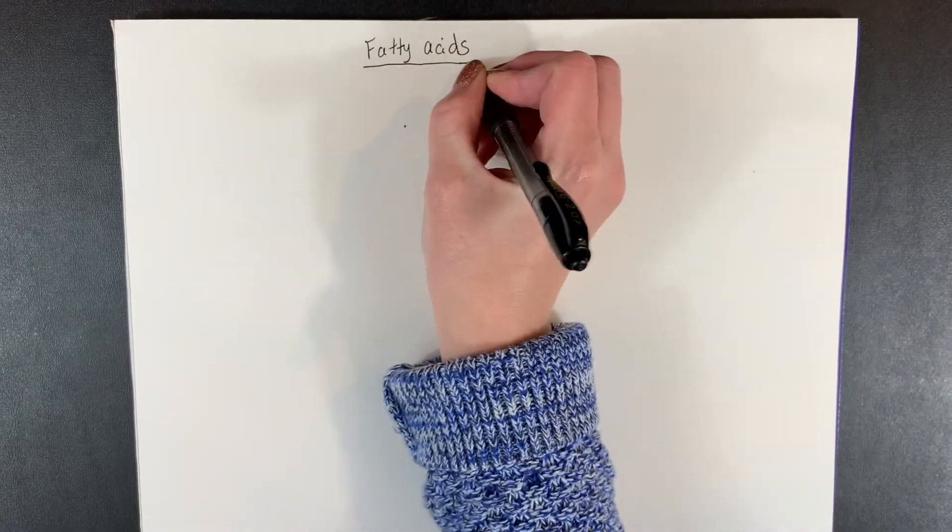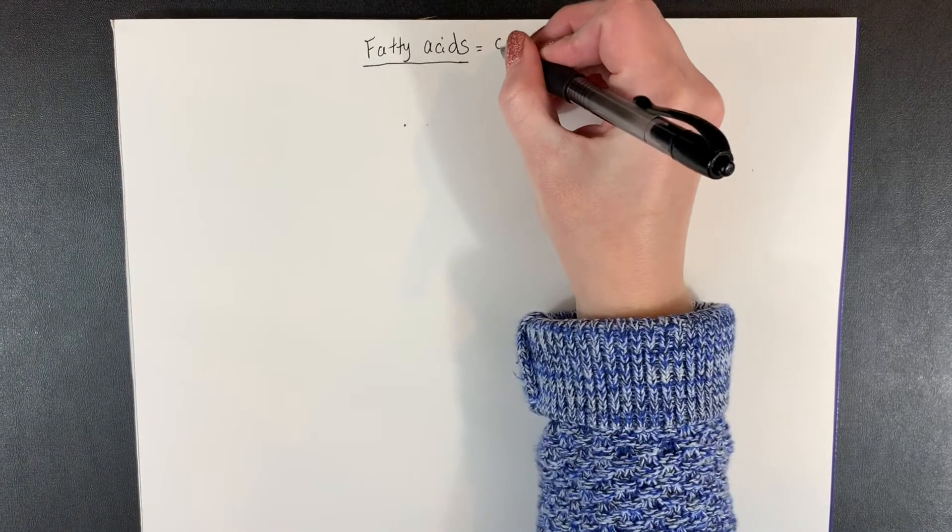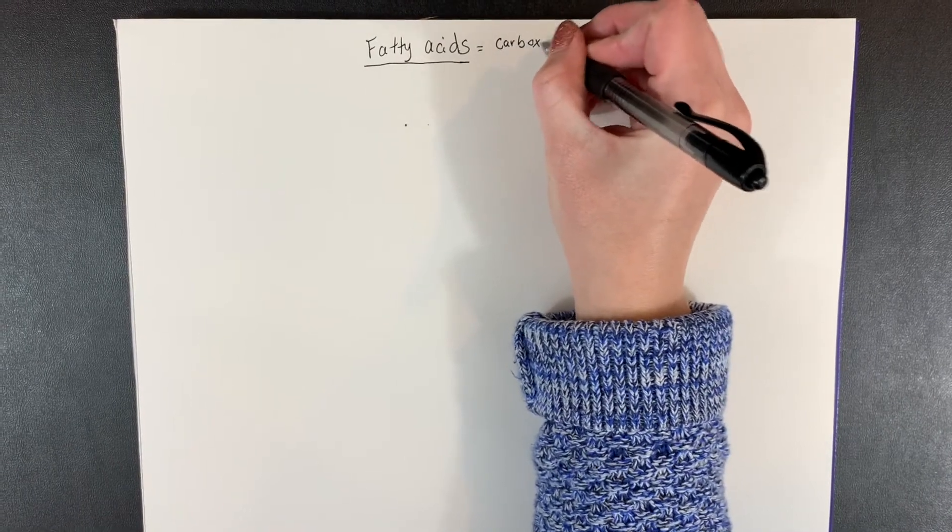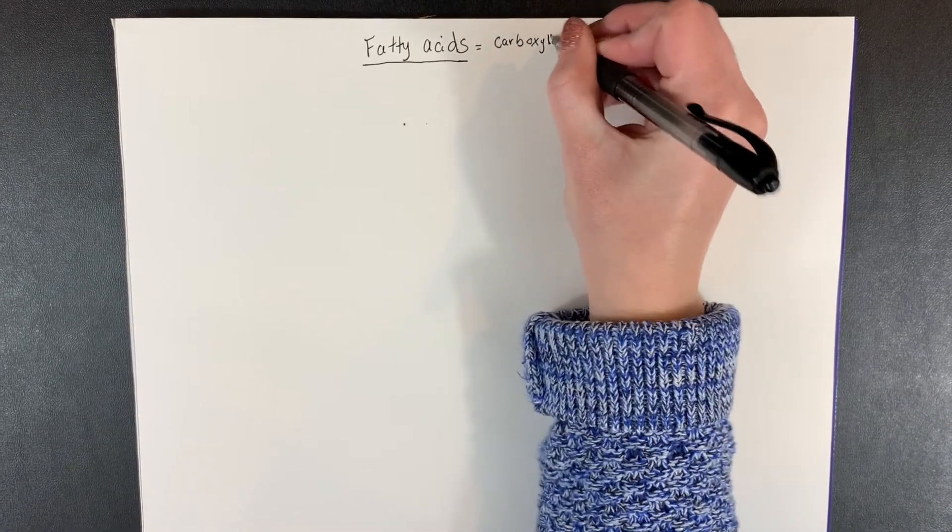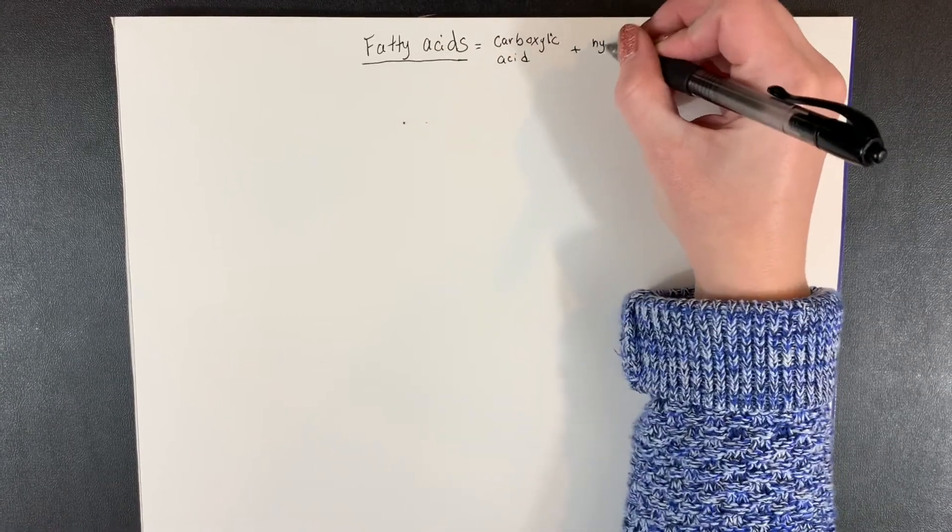All right, so fatty acids are made up of two different components. They are a carboxylic acid and a hydrocarbon chain.